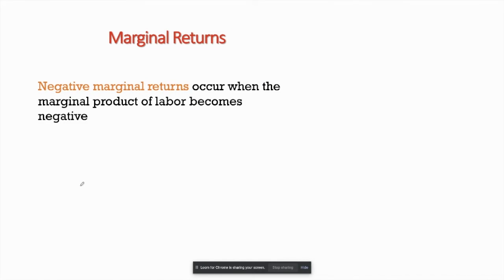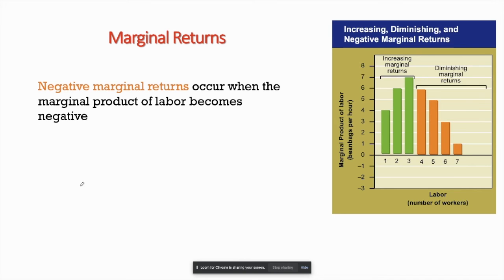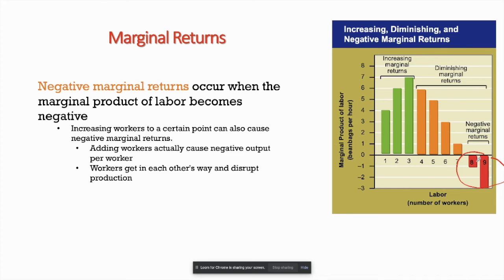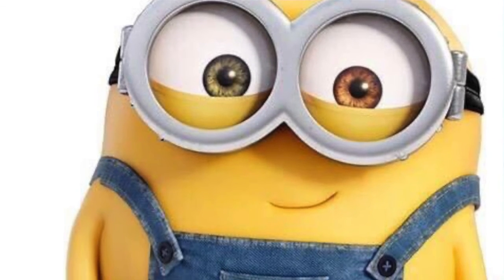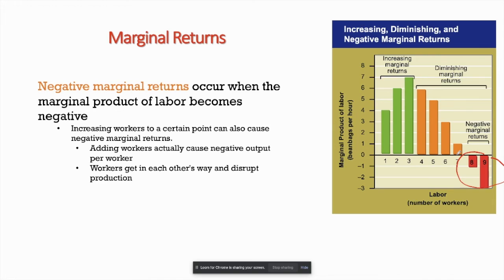The worst case is negative marginal returns, which we saw with the eighth and ninth workers. Each additional worker was producing so little that total output actually stopped going up — they're a waste of resources, actually hindering production. Think of that coworker who puts his feet up on the desk, throws things at you while you're trying to work, and causes so much frustration that you do an even worse job than before he arrived. Negative marginal returns is very bad for a firm.